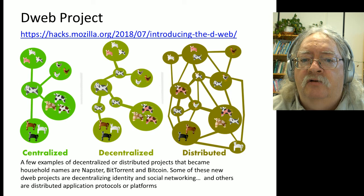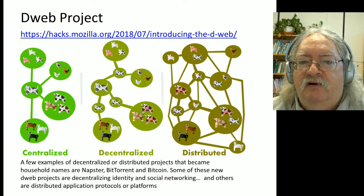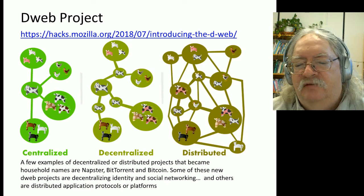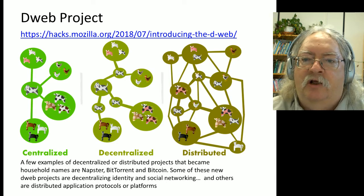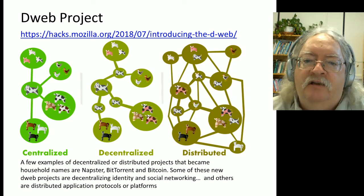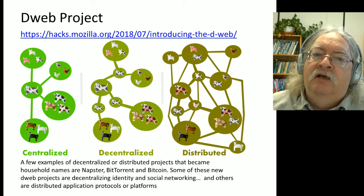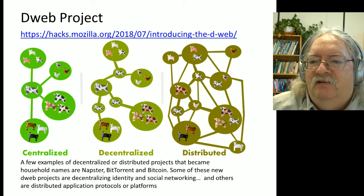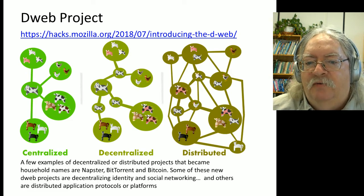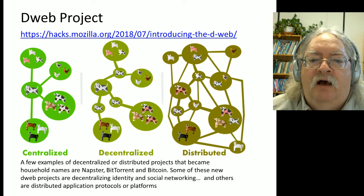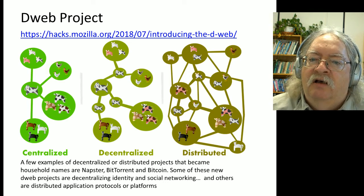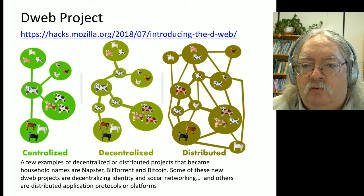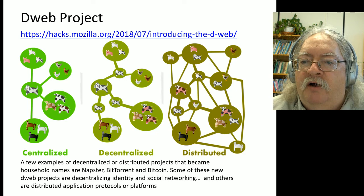Which brings us to the distributed web project. The idea here was introduced by Mozilla. It's been around actually a bit longer than the URL would suggest, which is July of this year. The idea and the distributed web project itself have been around a lot longer. The idea is we're moving away from centralized, away from decentralized, and toward a distributed model for the web.